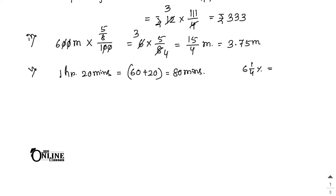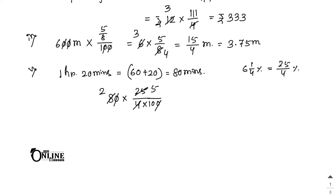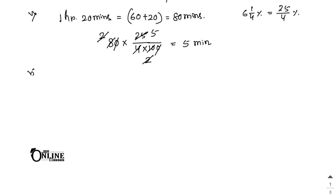6½% means 25/4 percent — wait, 6½ = 13/2, so 13/2 by 100. We have 80 × (25/4) / 100. Writing it as 4 × 100: zeros cancel, 4 cancels, 25 and 2 cancel, leaving only 5. So 5 minutes is your answer.